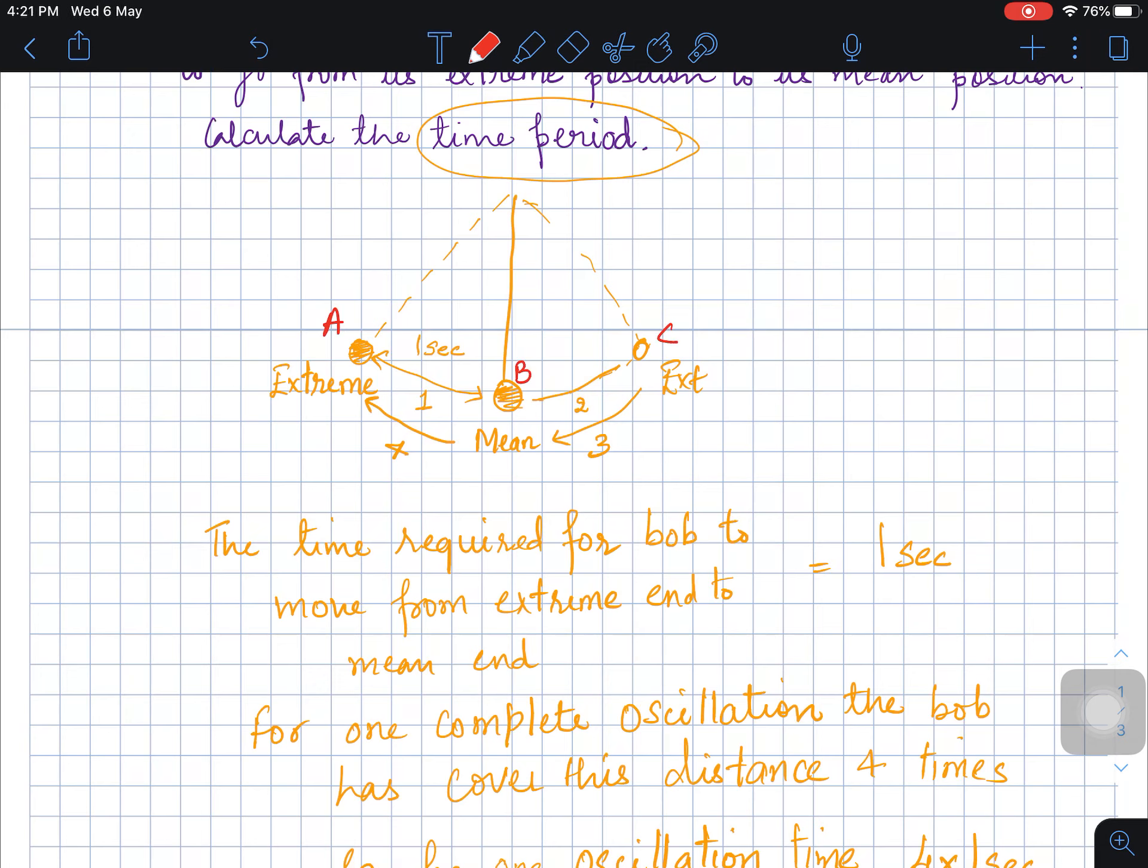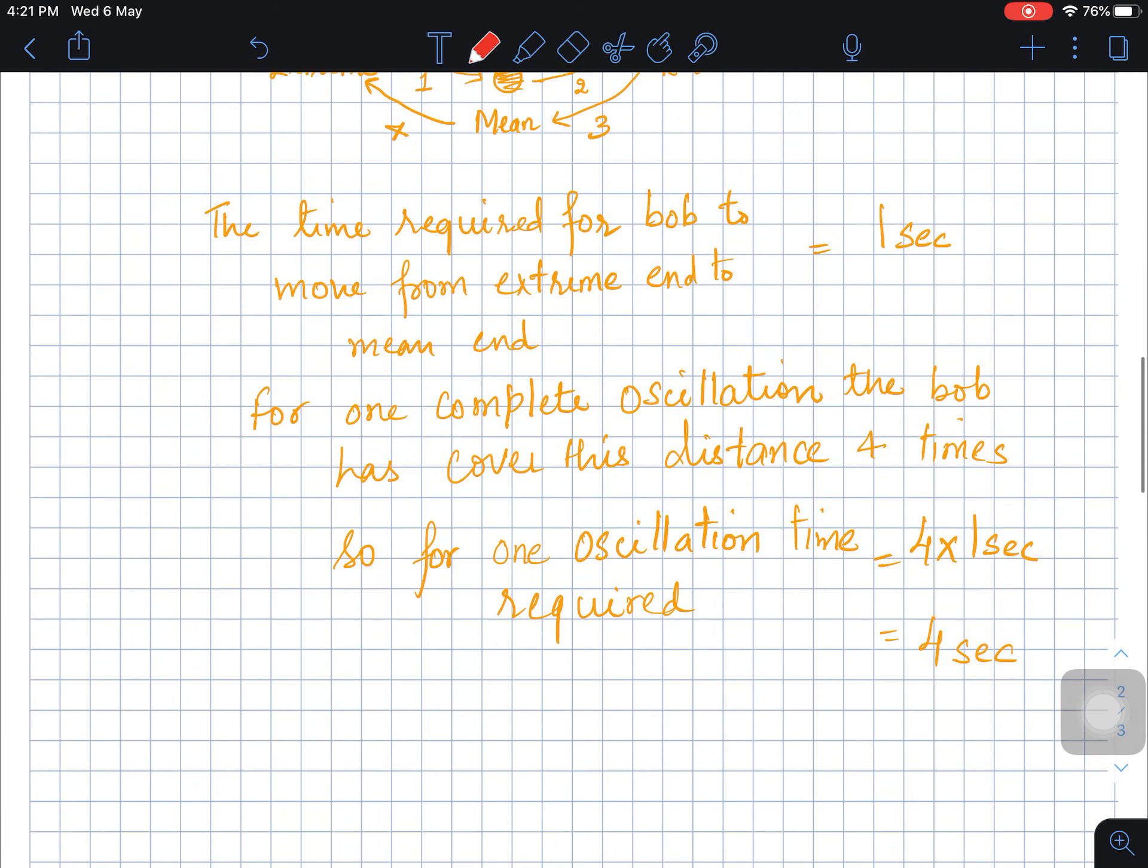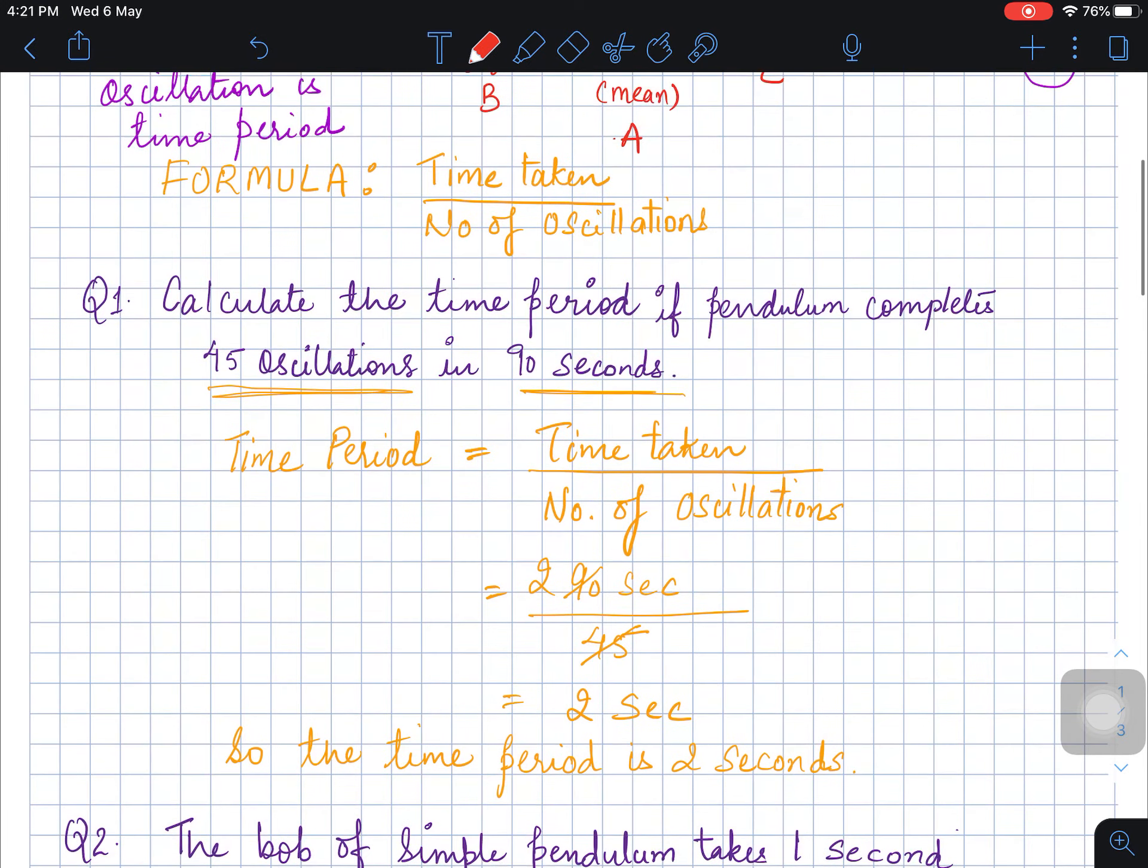So the time for A to B, B to C is always same. So if it is taking 1 second from A to B, so it will always take 1 second from B to C. And similarly, it will take 1 second from C to B, and from B to A.